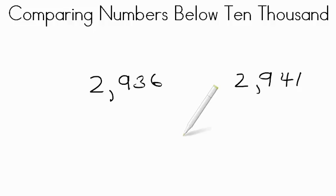Take a look at another. Okay, we have two numbers here, 2,936 and 2,941. So first thing we look at is our thousands. Well, here we have 2,000, we have 2,000 here. So those are exactly the same. So now we've got to look at our hundreds. Well, in our hundreds here, we have nine hundreds and we have another nine hundreds. So those are exactly the same.